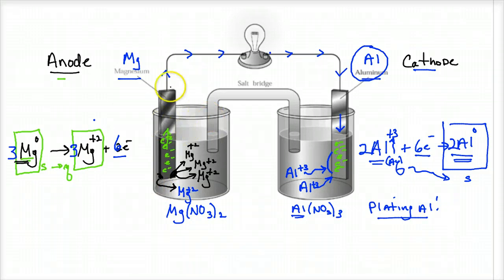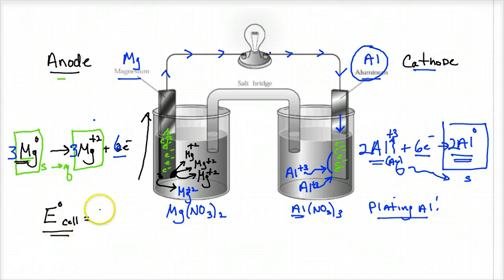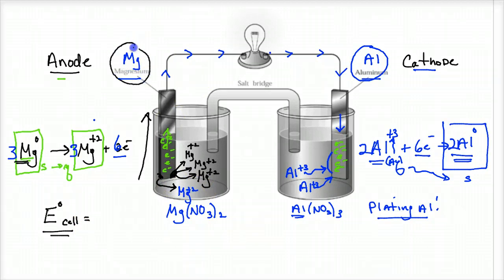There is a voltage across this conductor because magnesium spontaneously pushes its electrons through the current — this is like an energy or force. These voltages determined through tables are called electromotive forces, sometimes written as E°cell. For those using courses without voltage tables, you know it's spontaneous because magnesium is more reactive than the cathode metal.